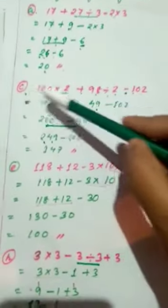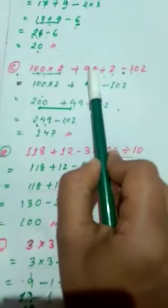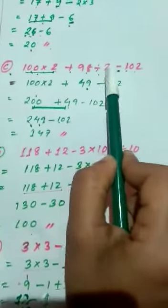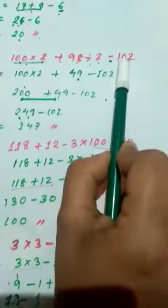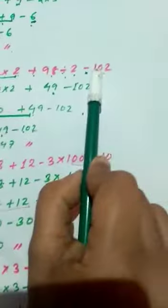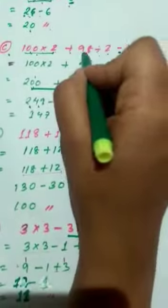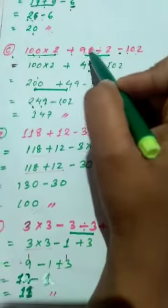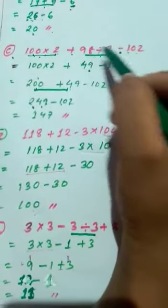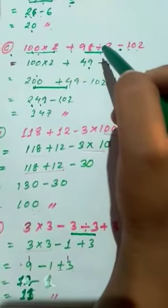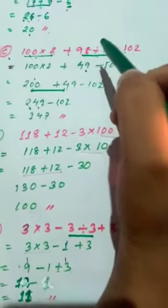Now we are going to show you question (c). See here: 100 into 2 plus 98 divided by 2 minus 100. How will we do it? Same way, we will apply DMAS here also. We have to do the division work first, so 98 divided by 2.